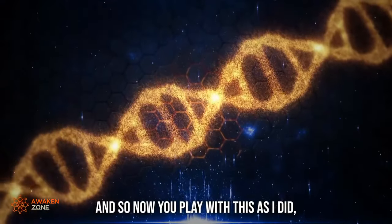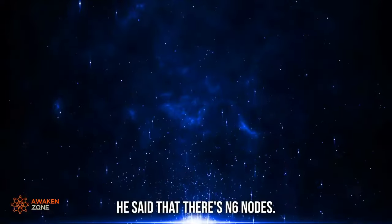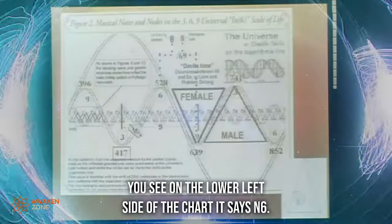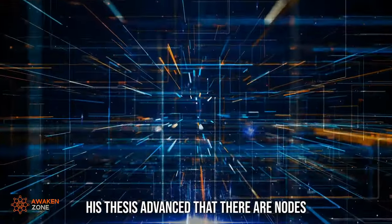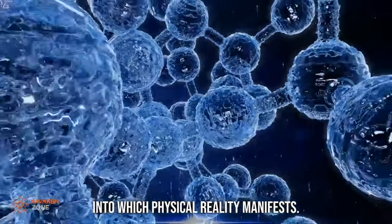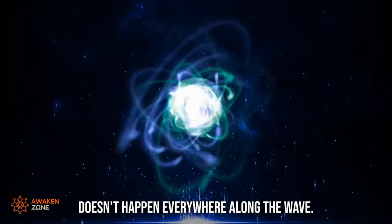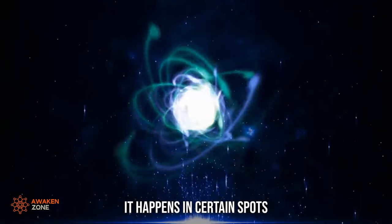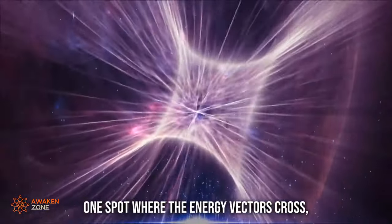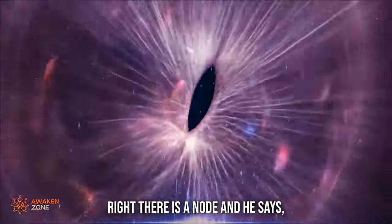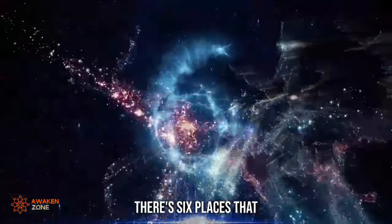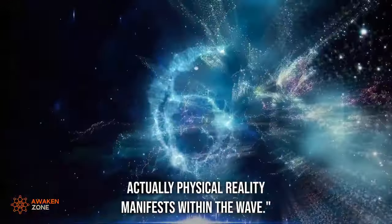And so now you play with this, as I did. He said that there are N6 nodes. His thesis advanced that there are nodes into which physical reality manifests. It doesn't happen everywhere along the wave. It happens in certain spots where the energy, just like at the center of a figure eight - bingo - there's a unique spot, one spot where the energy vectors cross. Right there is a node. And he says, in the grand standing wave of the universe, there's six places that actually physical reality manifests within the wave.